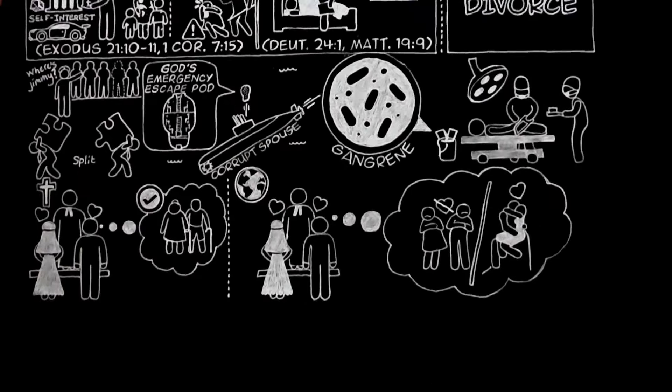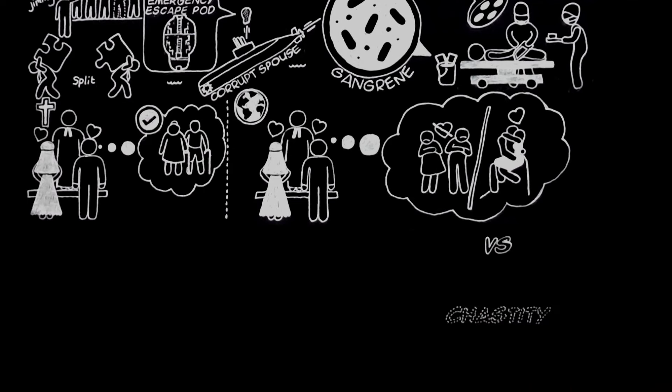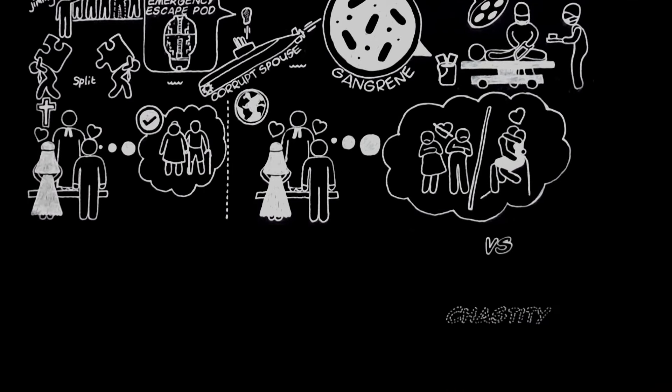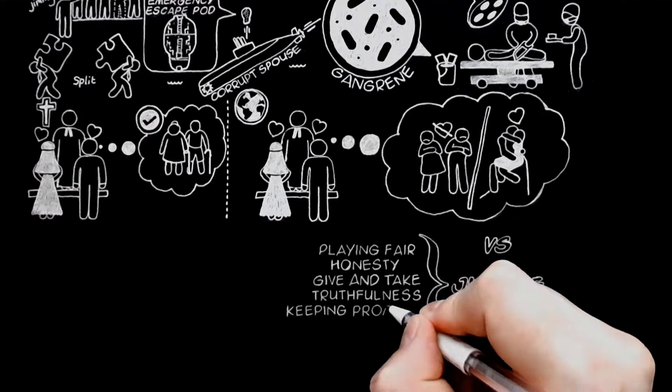What they all disagree with is the modern view that it is a simple readjustment of partners to be made whenever people feel they are no longer in love with one another or when either of them falls in love with someone else. Before we consider this modern view in its relation to chastity, we must not forget to consider it in relation to another virtue, namely justice. Justice, as I said before, includes the keeping of promises.